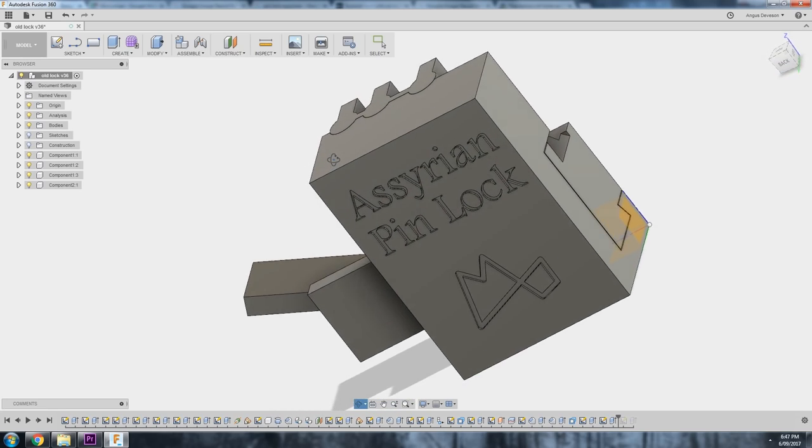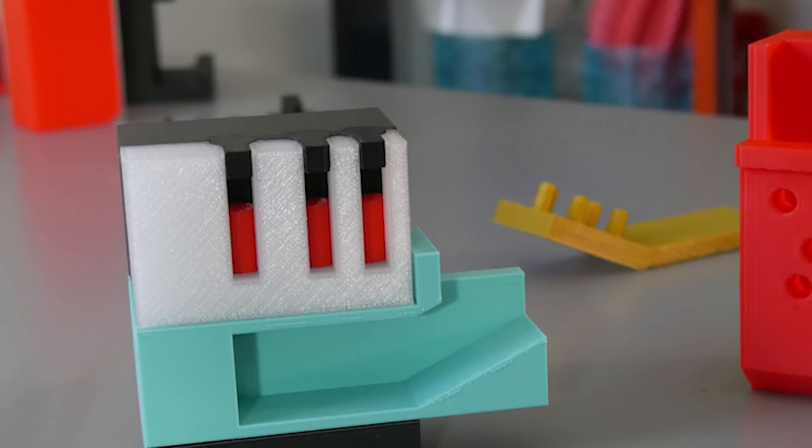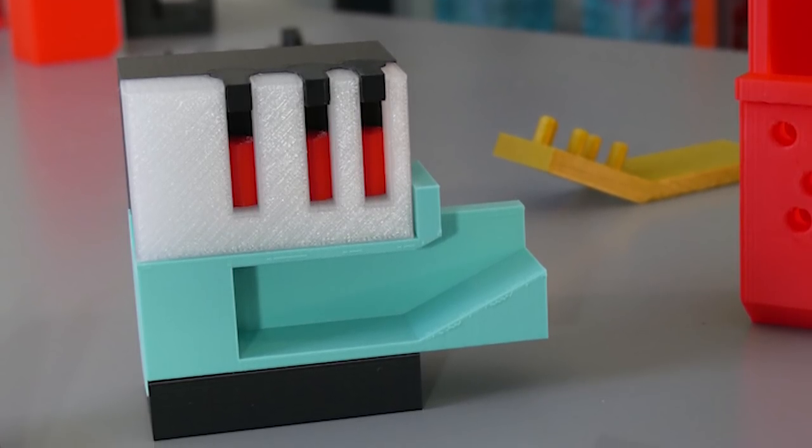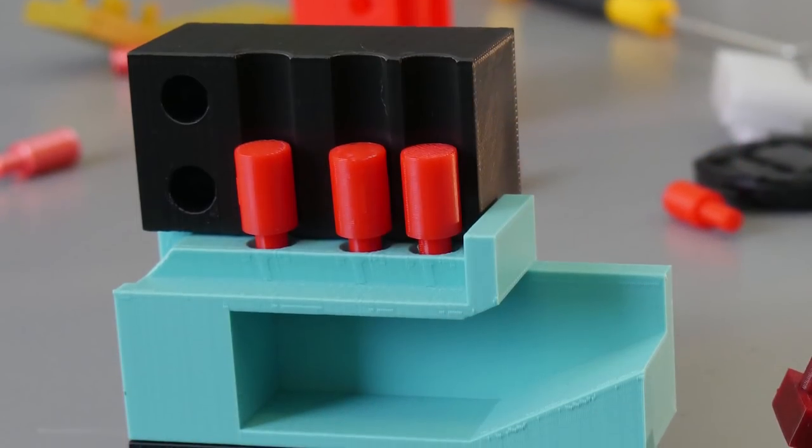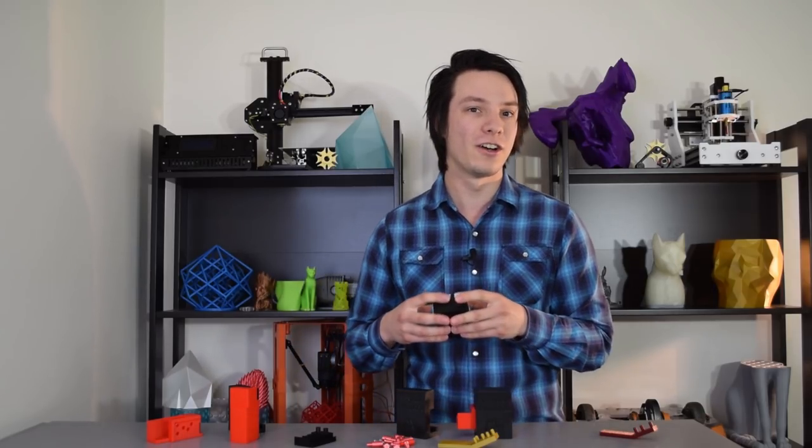This model was designed in Fusion 360 and created on the Cetus Mark II 3D printer using a variety of PLAs. Although my design is not flourished in any way, it's purely here to demonstrate the concept with the front of the lock portion cut away. Despite being so ancient, this mechanism still has some similar features to modern day locks, so let's take a closer look.